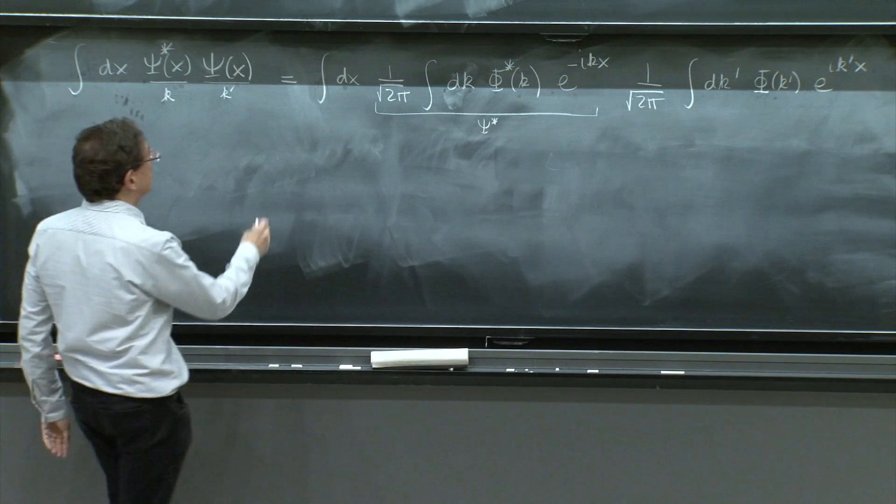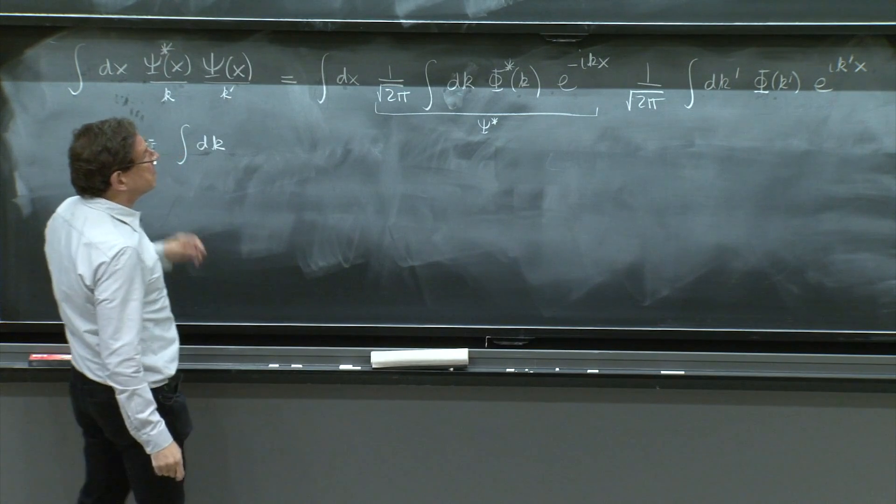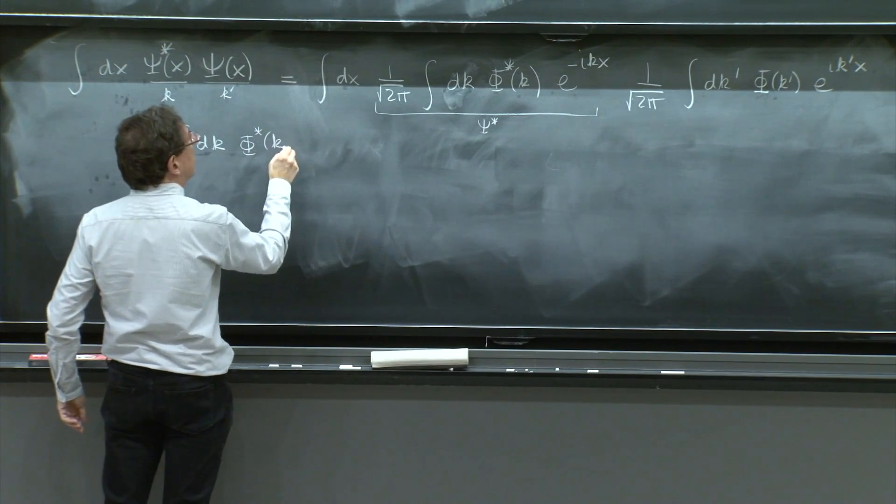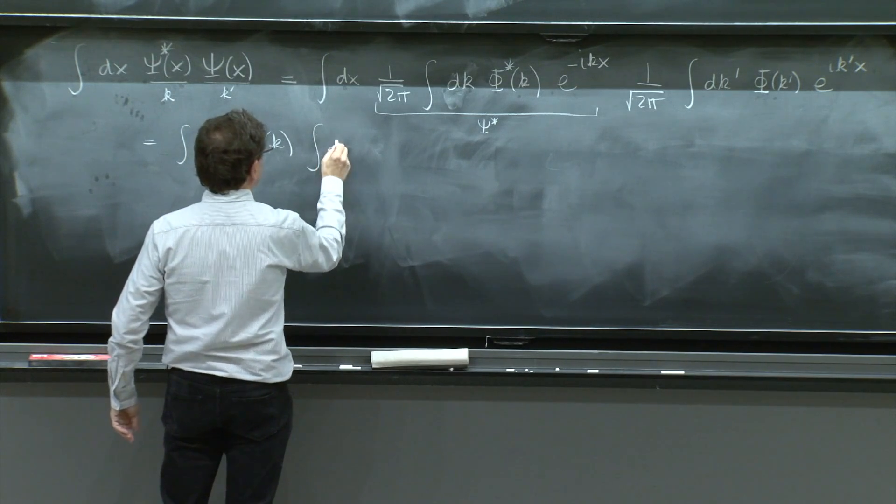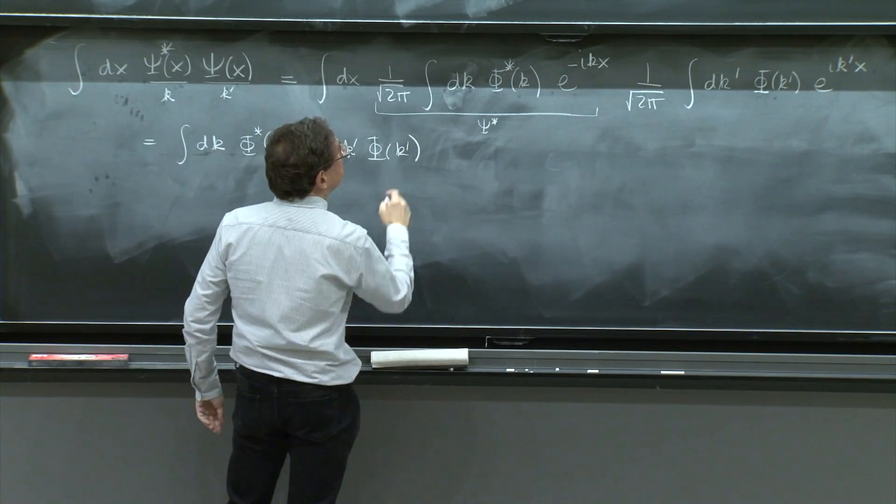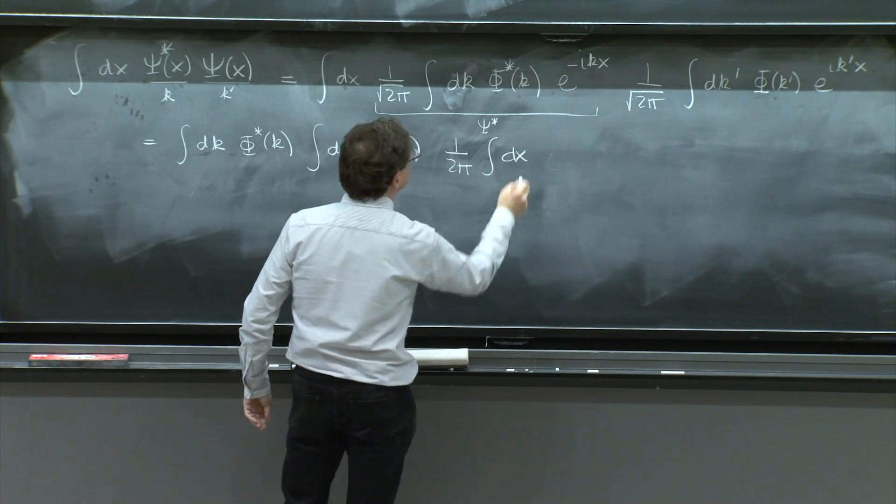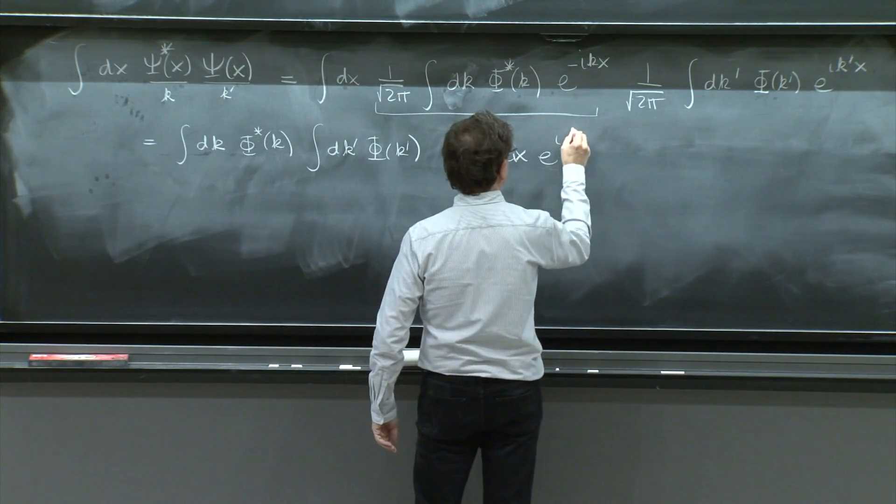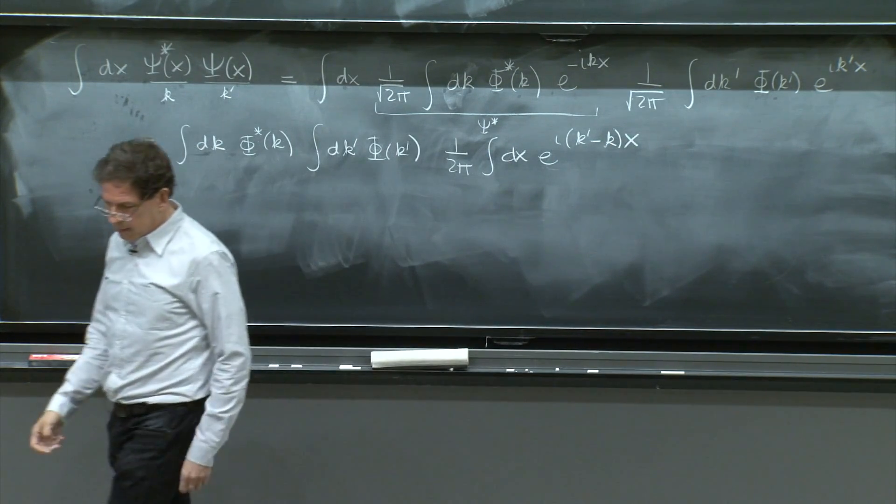So in fact, let me write this as integral dk phi star of k, and then I have 1 over 2 pi integral dx e to the ik prime minus kx. I think I didn't miss any factor.